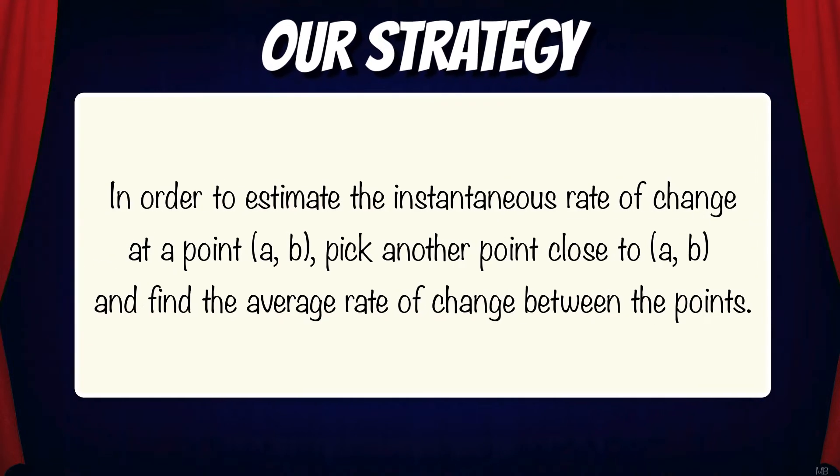So here's our general strategy. In order to estimate the instantaneous rate of change at a point (a, b), we're going to pick another point close to (a, b) and find the average rate of change between the points.